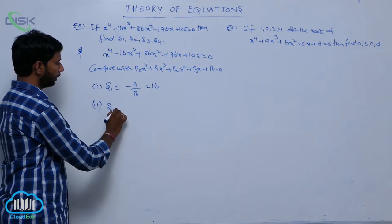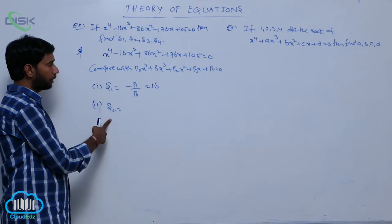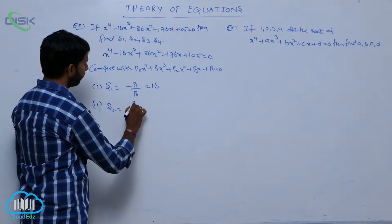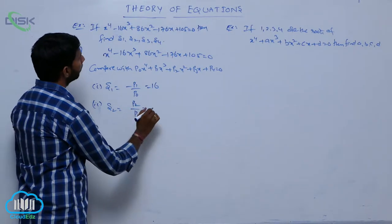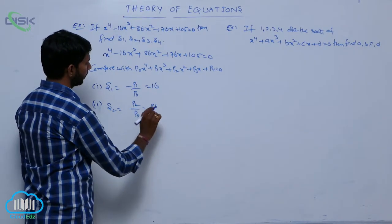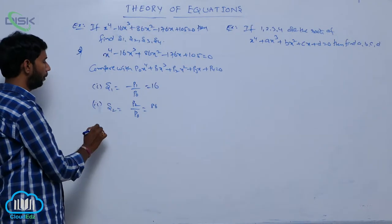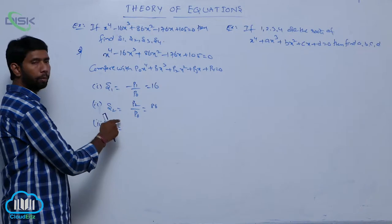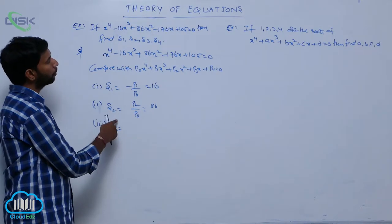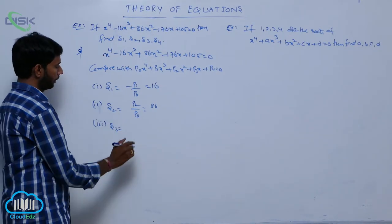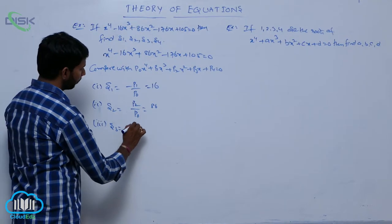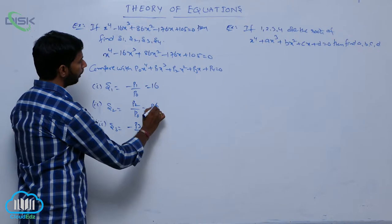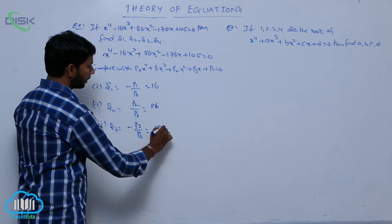Second, s2 equals the sum of products of roots taken 2 at a time, which equals p2 by p0. Here p2 equals 86 and p0 equals 1, so s2 equals 86. Next, s3 means the sum of products of roots taken 3 at a time. s3 equals minus p3 by p0, and minus p3 by p0 equals 176, so s3 equals 176.